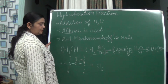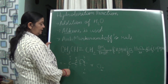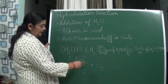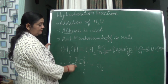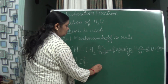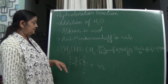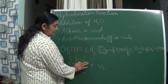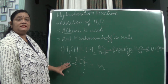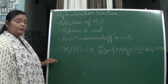In anti-Markovnikov addition, H₂O₂ is used as reagent. Instead of –OH attaching to the more substituted (stable) carbon, the carbocation forms on the less stable carbon and –OH attaches there. Whenever we see H₂O₂ being used, we know the reaction follows anti-Markovnikov's rule.